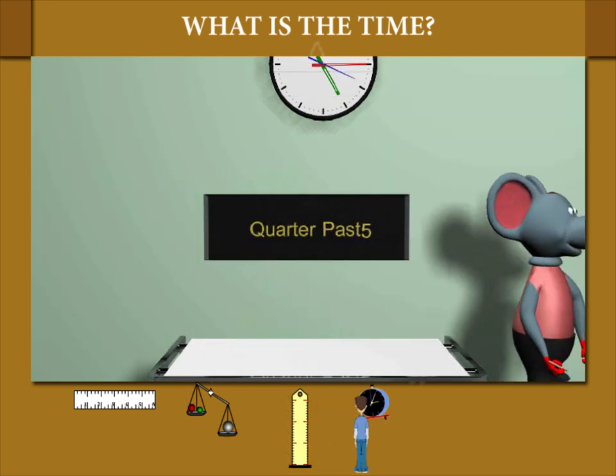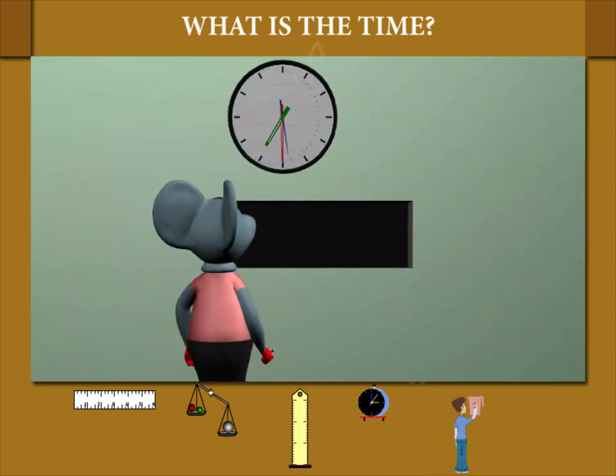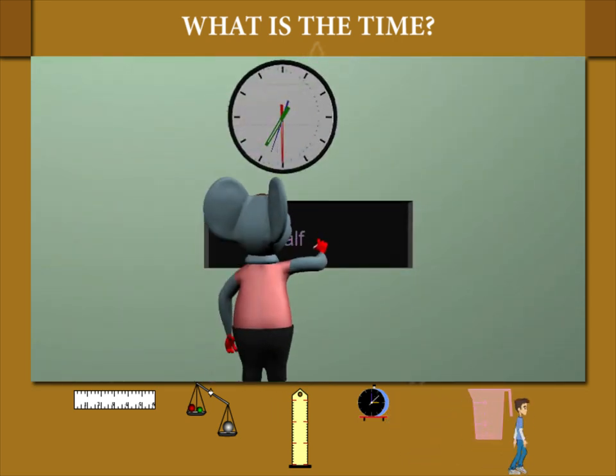He moves to the next clock. That shows the time as 7:30. Toby writes on the board half past 7.